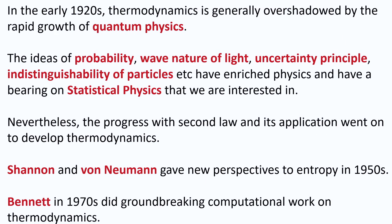In the early 1920s, not much work was done in thermodynamics because there was very rapid growth of quantum physics, including the Schrödinger equation, wave-particle duality, uncertainty principle, and the wave nature of light. The indistinguishability of particles shows up in statistical mechanics in a big way, and in fact it helps remove a paradox known as the Gibbs paradox, which we will encounter and which has a large bearing on the study of statistical physics.